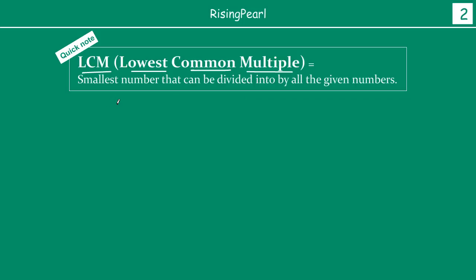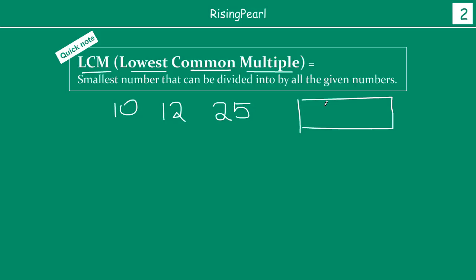Let's take an example — it's always easy when we take an example and then discuss these concepts. So for example, if I have 10, 12, and 25, randomly picking some numbers, and I want to find out the LCM of 10, 12, and 25, it means I'm trying to find out a number — let's just call it ABC — such that ABC divided by 10, ABC divided by 12, and ABC divided by 25 each leave no remainder. The smallest such number is what we mean by LCM.